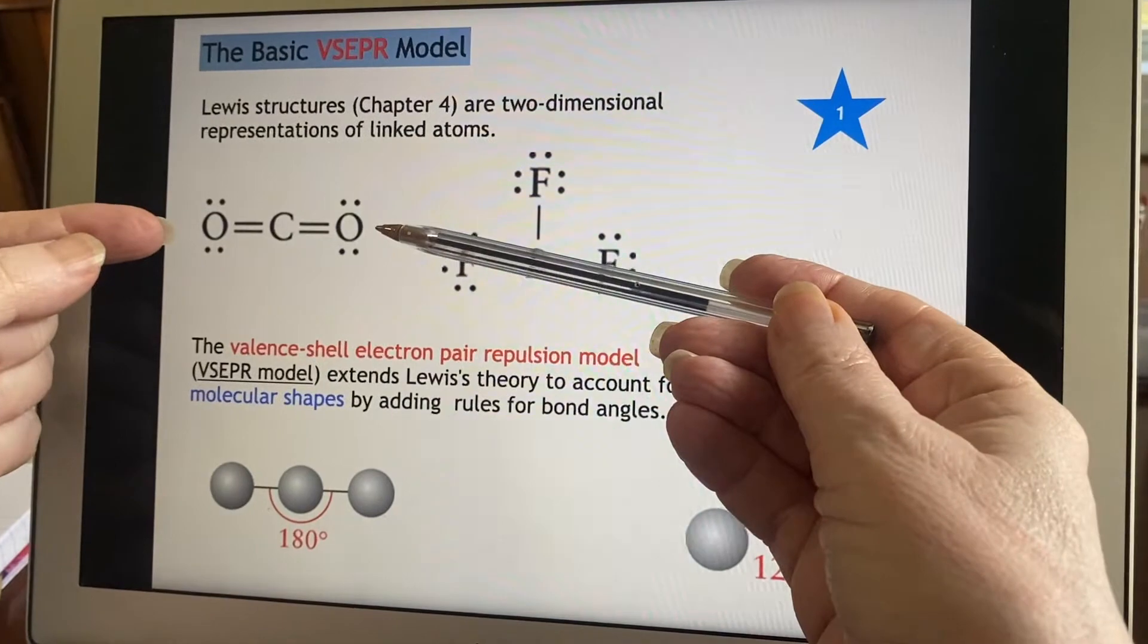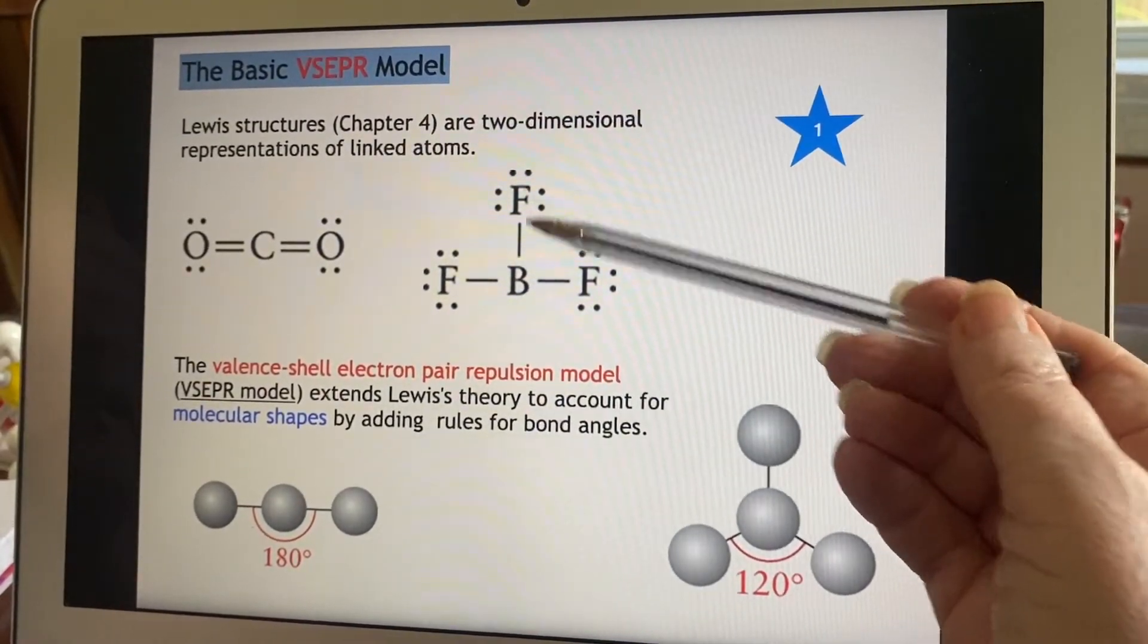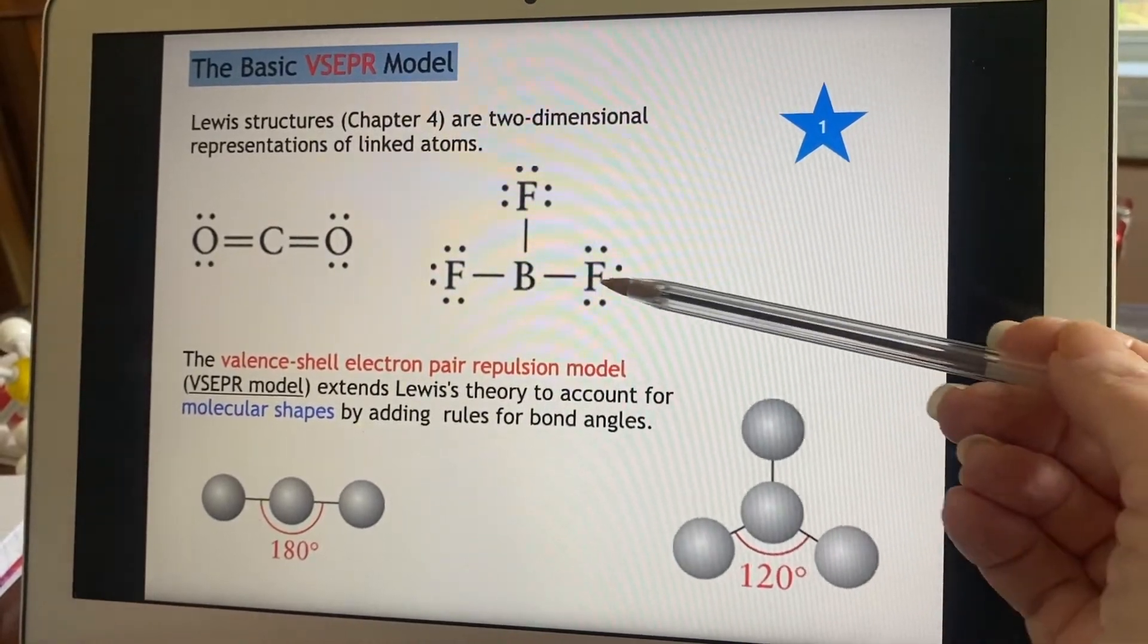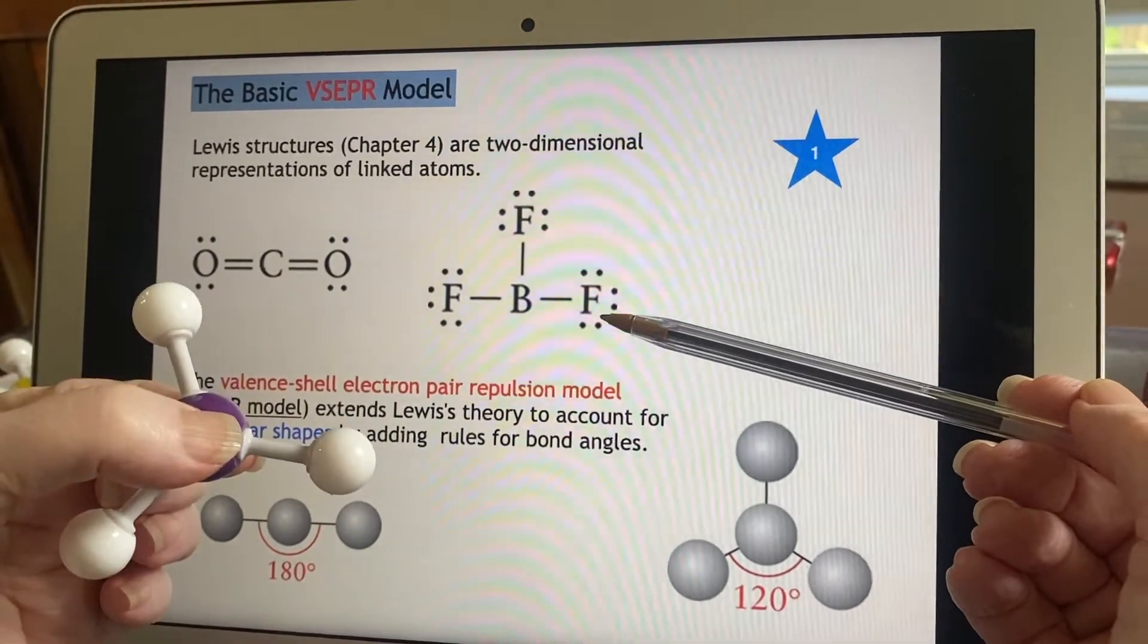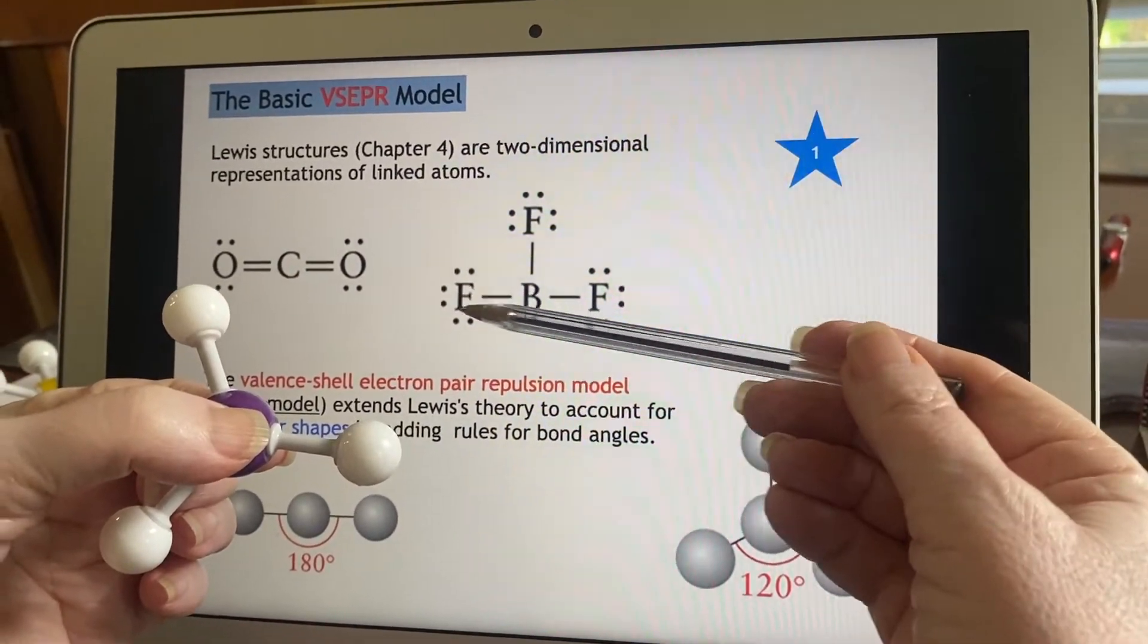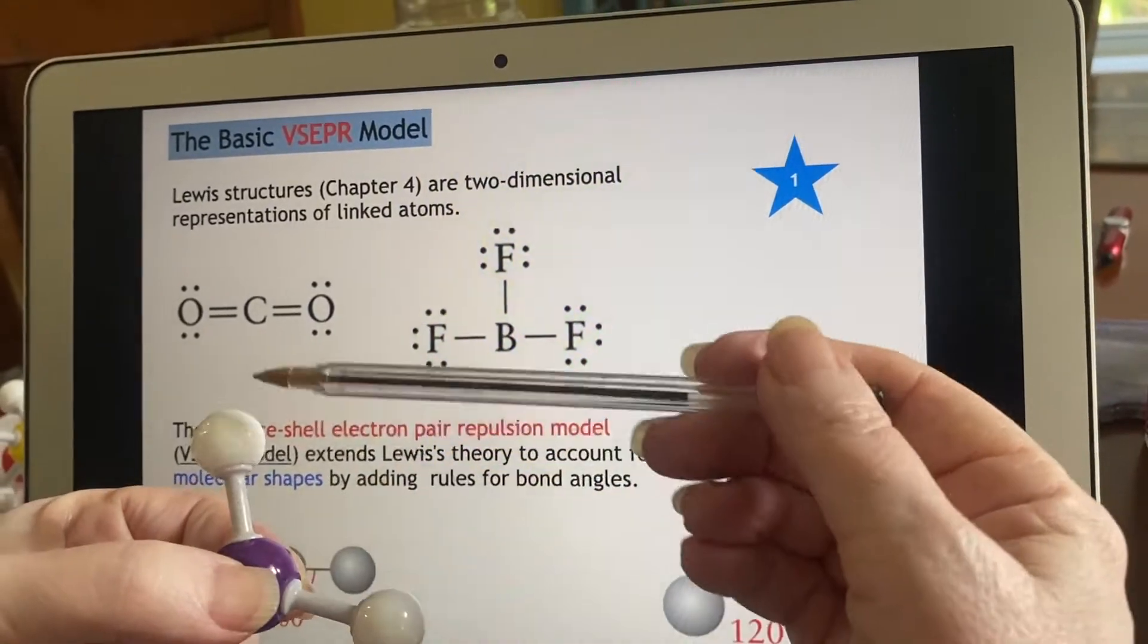It's not too bad when you talk about something that's linear. But if you talk about something that has a shape like this, it should actually look like this. Not two 90-degree angles in this 180. No, they should be 120-degree angles.